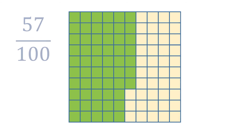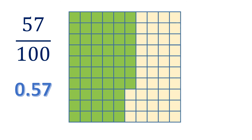Another one. We have five columns shaded, so that means it's fifty. And there are seven extra shaded parts, making it all in all fifty-seven. So we have fifty-seven shaded parts out of one-hundredth, or fifty-seven hundredths. In decimal, it's 0.57, which is also read as fifty-seven hundredths.